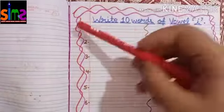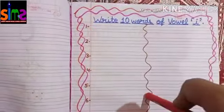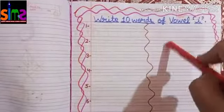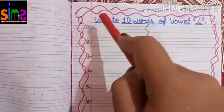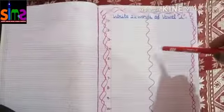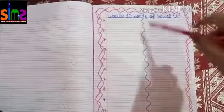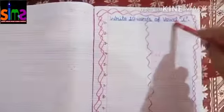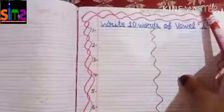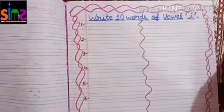Kids, today in English you all will do this worksheet. In this worksheet you all will write 10 words of vowel I. When you all do this worksheet, you will write 10 words of vowel I. Write 10 words of vowel I.